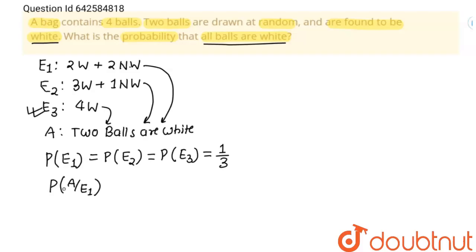Now I am going to find P(A|E1), the probability of drawing two white balls given that the bag has two white and two non-white balls. This equals 2C2 divided by 4C2. There are two white balls so we can draw two white balls in 2C2 ways, and the total ways to draw two balls from four is 4C2, which is the sample space.